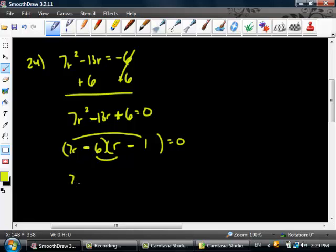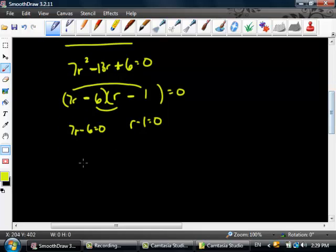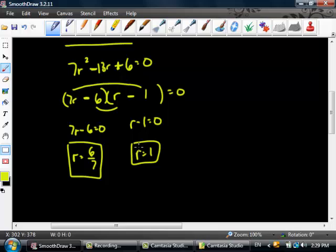What I do from here is I set each one equal to 0 individually. And then I just solve for r. From here, I'm going to add 6 then divide by 7. r equals 6 over 7. Here, r equals 1.